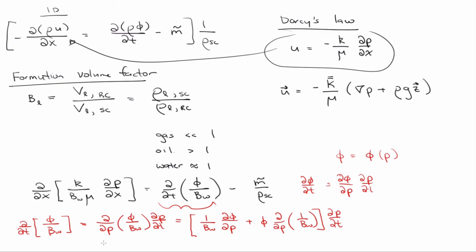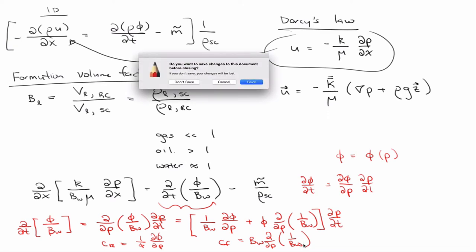And that's not exactly what they are, but with a little bit of manipulation you can get the... So the compressibility of the rock is one over the porosity times the change in porosity with respect to pressure. And the compressibility of the fluid is the formation volume factor. Those two things.